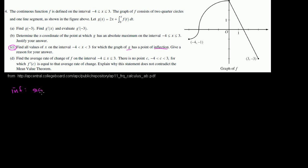So an inflection point is a point where the sign of the second derivative changes. So if you take the second derivative at that point, or as we cross that point, it goes from positive to negative, or negative to positive. And to think about that visually, you can think of some examples.